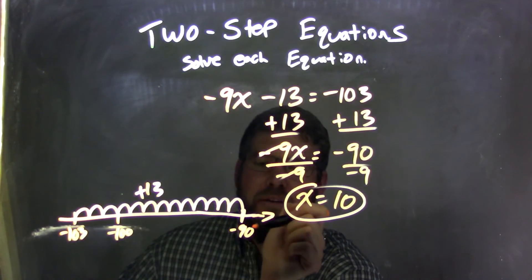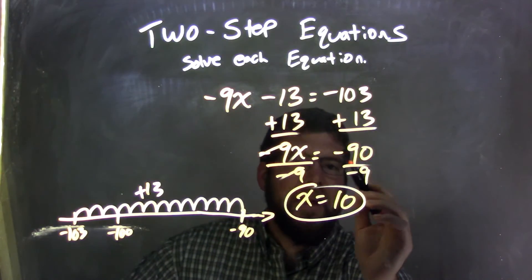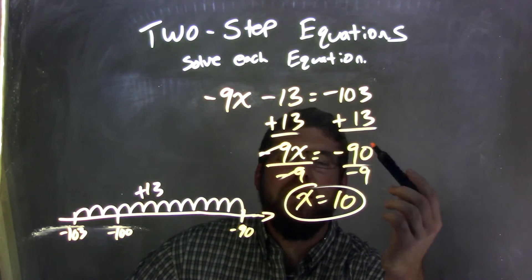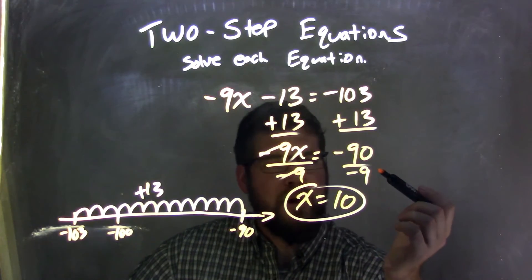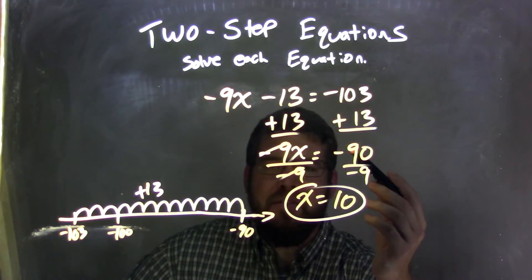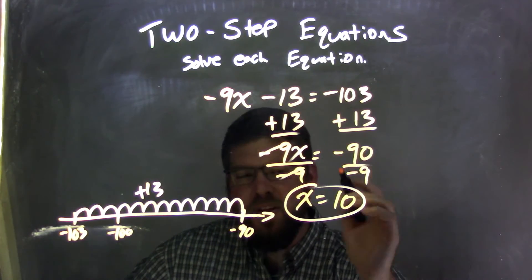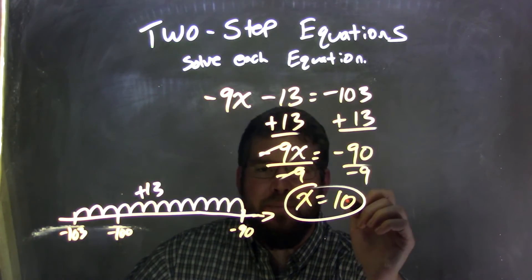Okay, so 10 more units gives me negative 90, and so we have negative 90 right there. And then I had to divide by negative 9 to both sides, knowing that a negative divided by a negative is a positive, and 90 divided by 9 is 10. Negative 90 divided by negative 9 is a positive 10, and then giving me my final answer here of x equals positive 10.